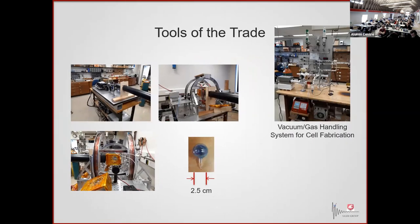Here's what my lab looks like, and I'll point out what a cell looks like. We make our own cells. We have a gas handling system, the glass blower makes manifolds for us, my students learn how to blow glass, seal cells off, distill alkaline metal into cells, and run everything. Not very many groups do this anymore. There was a lot of cell making dating back to the 1950s and 60s when people were doing all sorts of things with alkaline metals and optical pumping. We're one of the few groups that still makes vapor cells, and I actually make vapor cells for a lot of other groups.